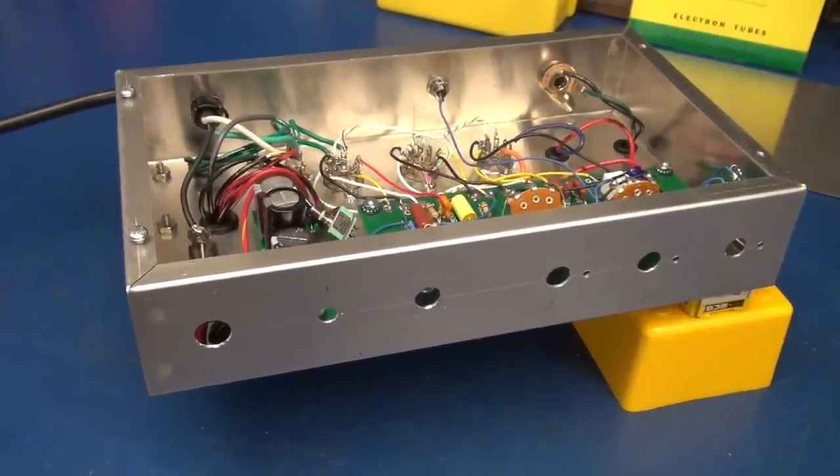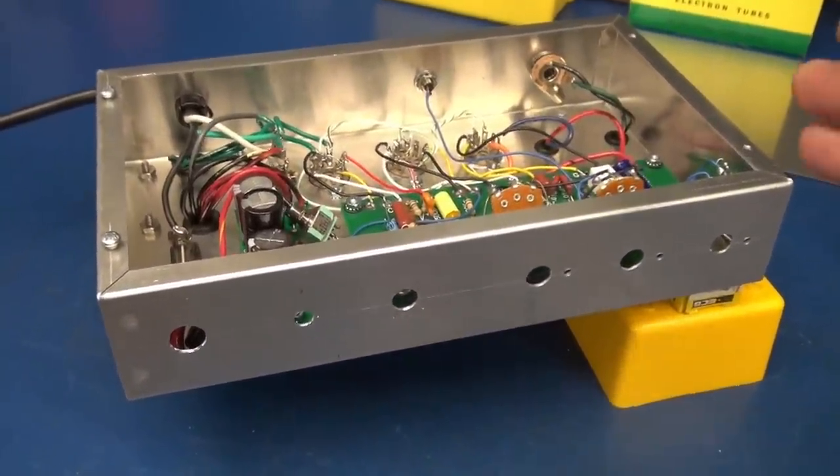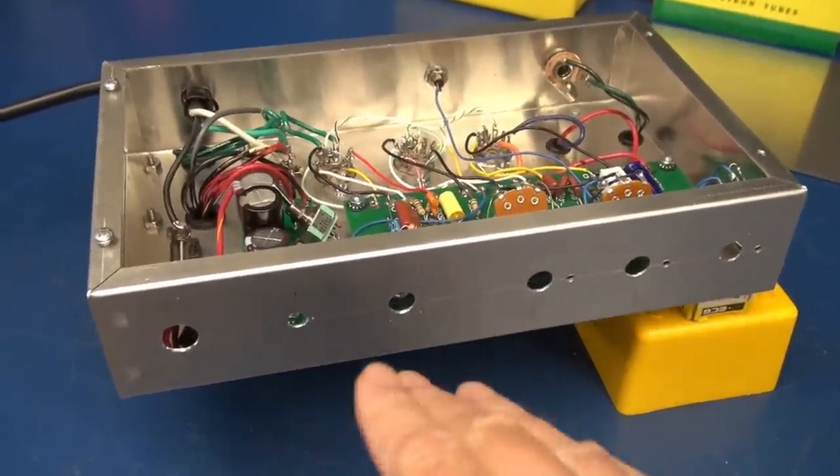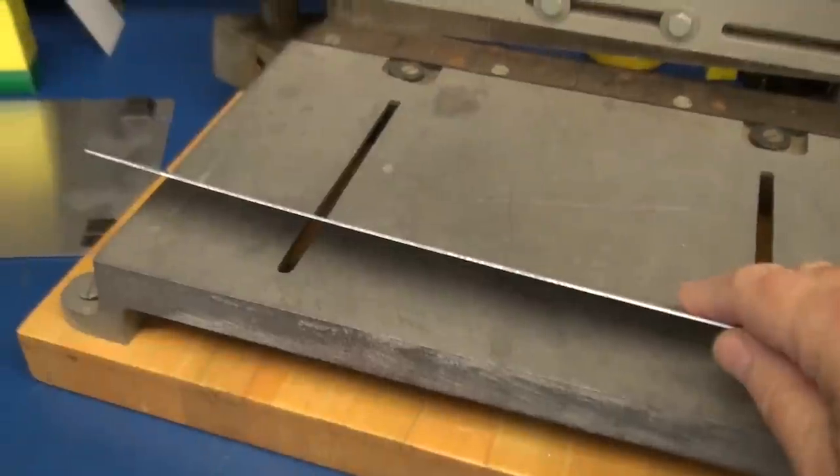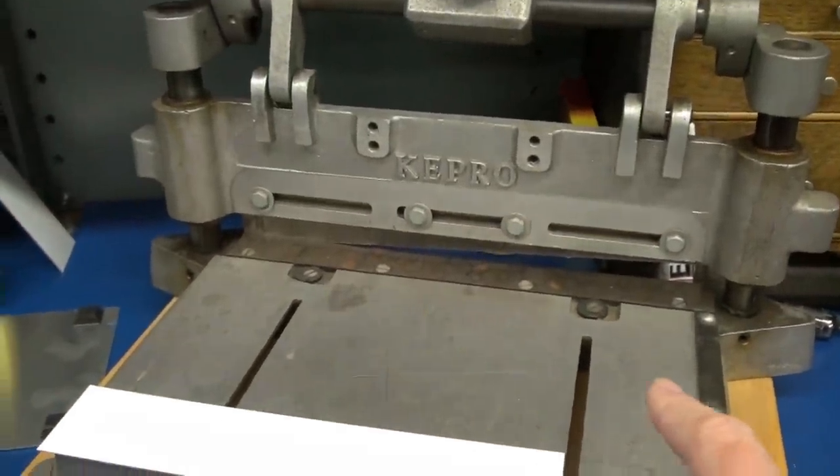Here's the steps for building your own custom control panel for your guitar amp project. This amplifier is already built and I need to add my control panel which in this case is a piece of 40,000 aluminum that I cut on my little sheet metal shear.